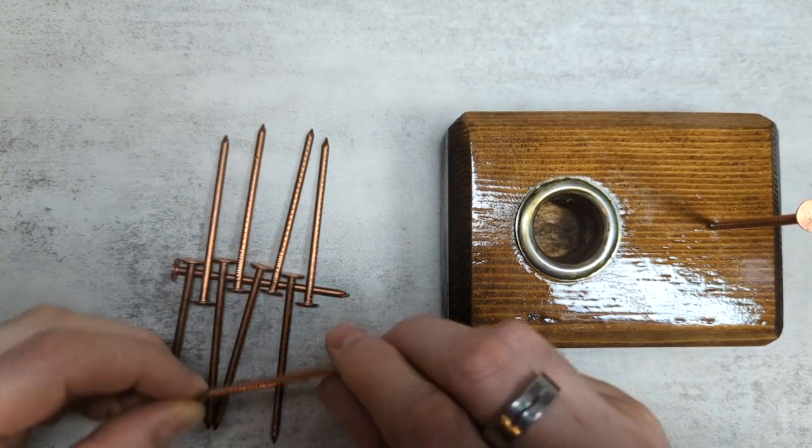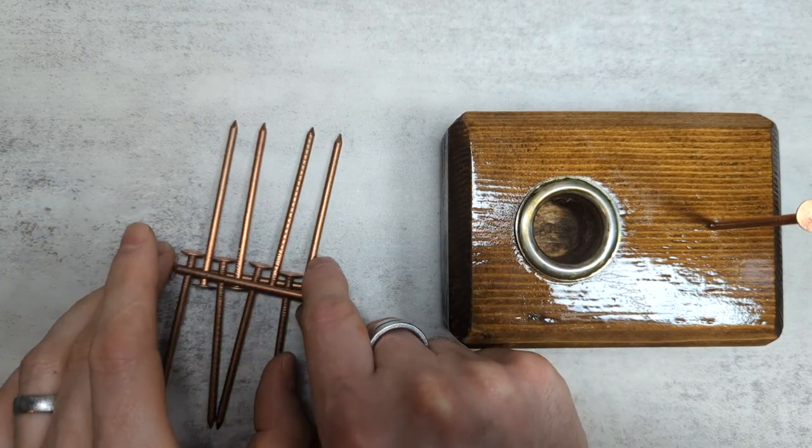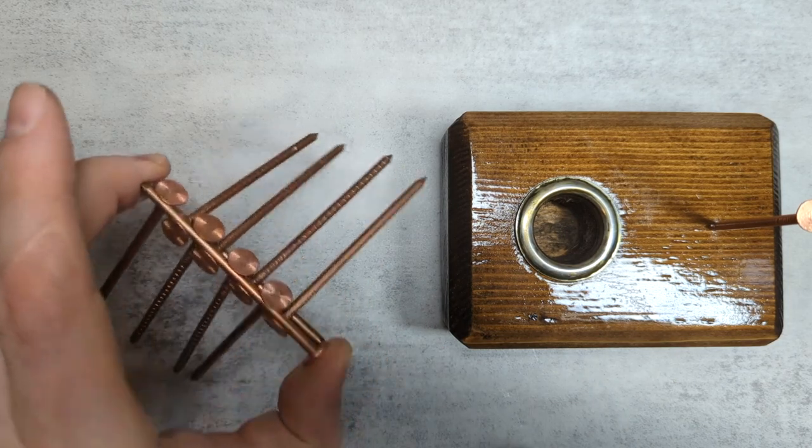And then when you just have one nail left, put that over the top like this so that its head is at the opposite end of the first nail's head and this should let you pick all the nails up.